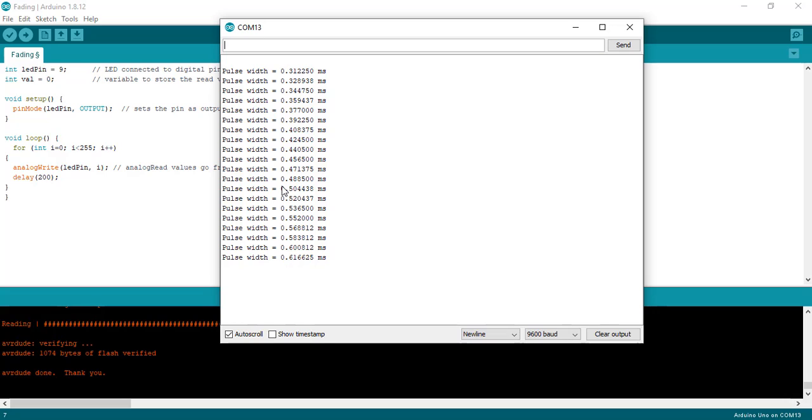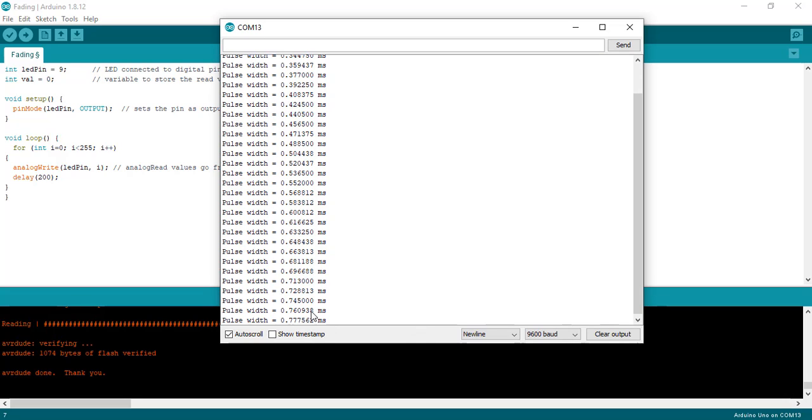Now select USB to Serial Converter COM pin to which TM4C123 is connected. As you can see the pulse duration measurement output on Serial Monitor. Also, the measured pulse duration keeps increasing as the pulse width of PWM signal increases from Arduino.